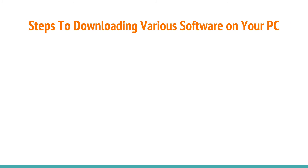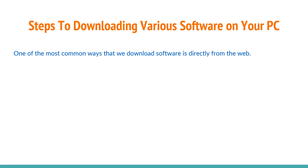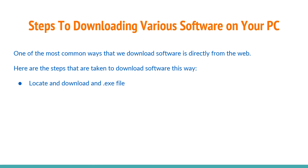One of the most common ways to download software is directly from the web. First, you locate and download the .exe file. Second, you locate and double-click the .exe file, which will most likely be saved in your downloads folder.